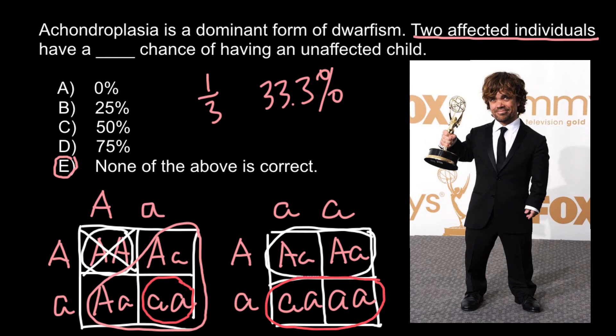I also want to add that not all forms of dwarfism are dominant. There are many different forms of dwarfism caused by recessive alleles, and of course in order to express that form, a person must have two recessive alleles. The most abundant form of dwarfism is caused by the gene named FGFR3, which resides on chromosome number 4.